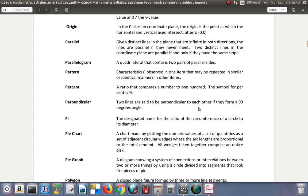Perpendicular. Two lines are said to be perpendicular to each other if they form a 90 degree angle. Pi. The designated name for the ratio of the circumference of a circle to its diameter. That's pi. To two decimal places, it is 3.14.